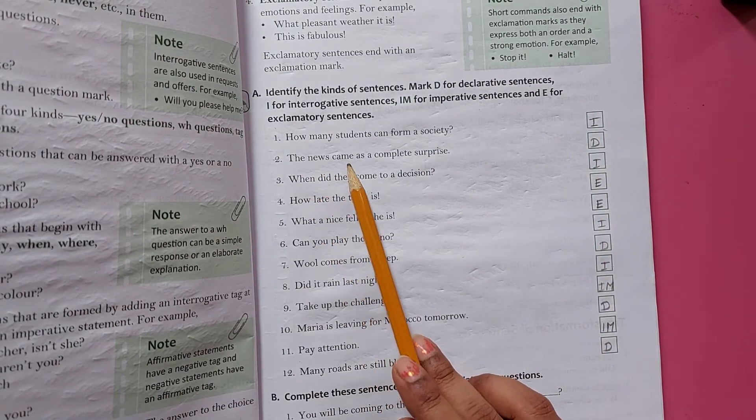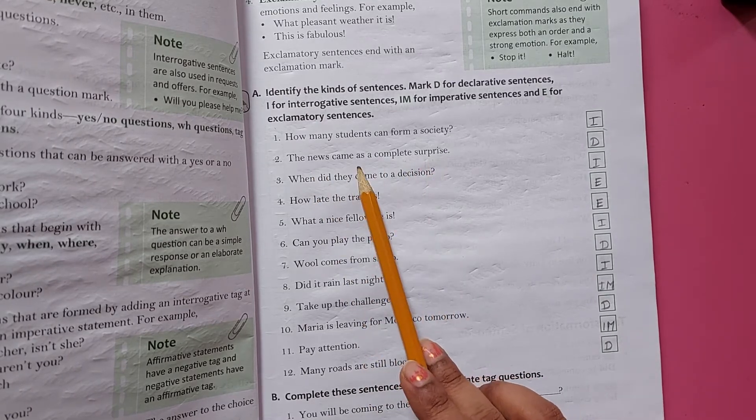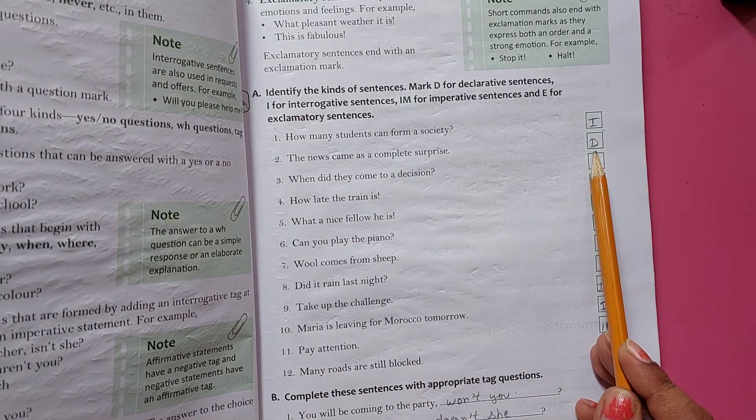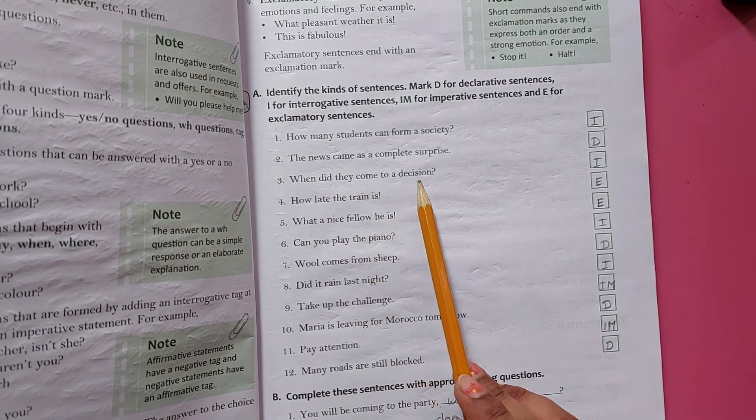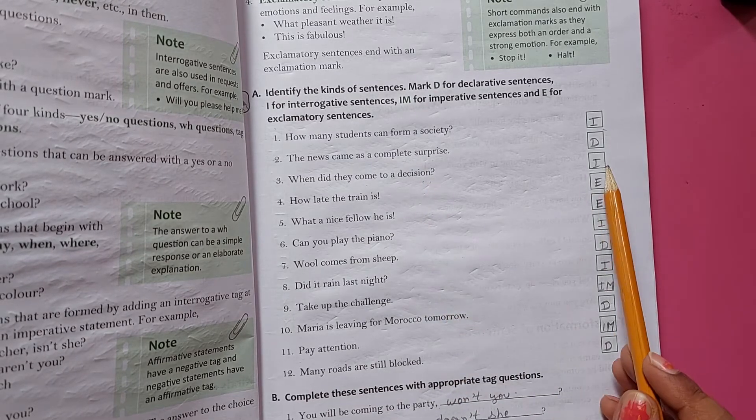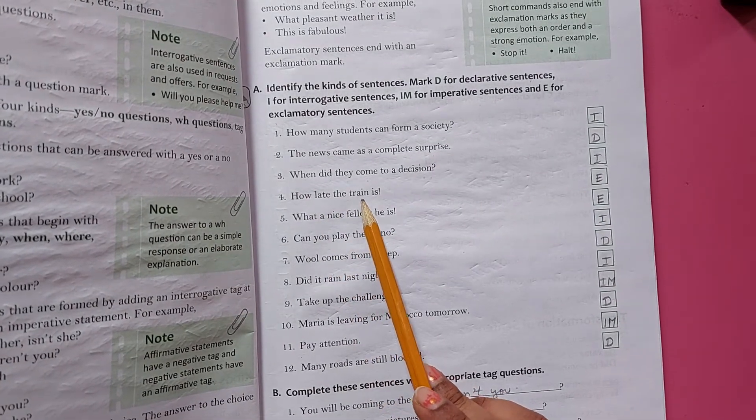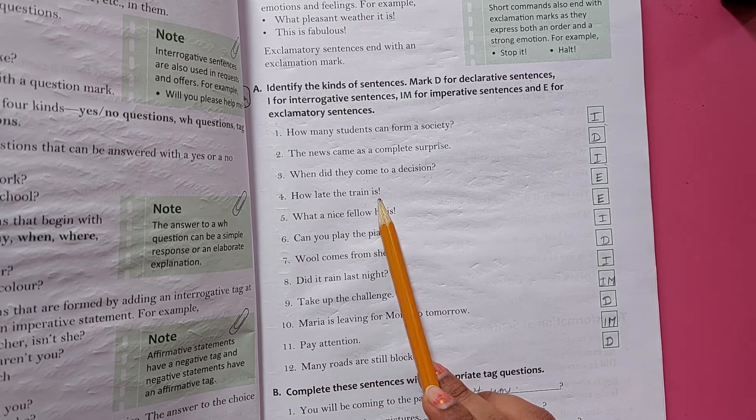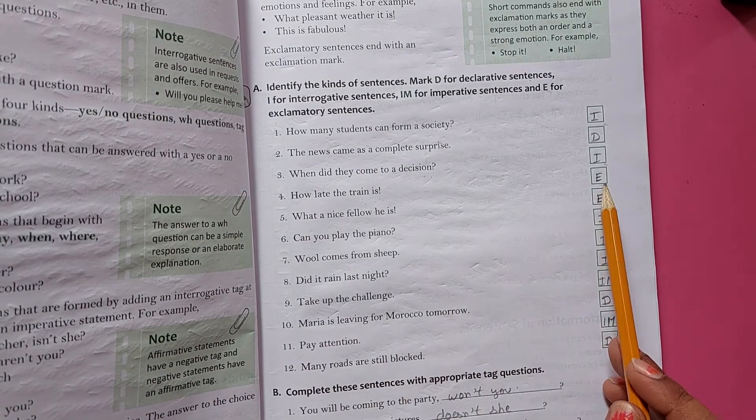Yeh hummara ek question form mein aagya. Toh yeh hummara kya huwa? Interrogative sentence. The news came as a complete surprise. Is meh hummye direction di jariye bataya ja raha hai. Toh yeh hummara declarative. When did they come to a decision? Question form mein, toh yeh hummara interrogative. How late the train is? Exclamation ka mark pard gya, toh yeh hummara exclamatory. We have to put E.